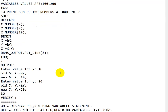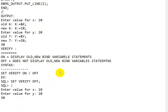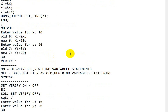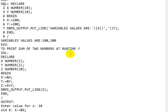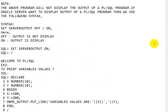This is how we add two numbers in PL/SQL. Remember, to control bind variable display, use `SET VERIFY ON` or `SET VERIFY OFF`. This is the way we can work with variables in PL/SQL.